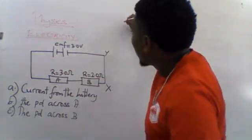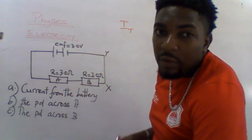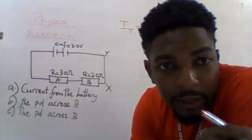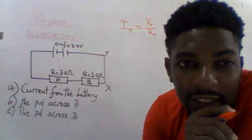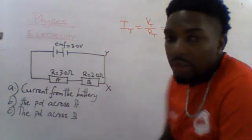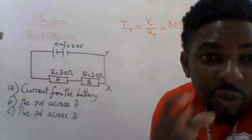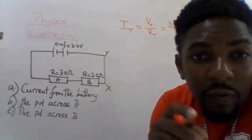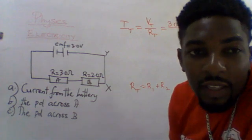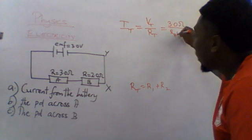We want to find the total current. Given that V is equal to IR, therefore I is going to be equal to V over R — total voltage divided by total resistance. The total voltage is the EMF given, which is 3 volts. Because it is a series circuit, the total resistance is the sum of the resistances: R_total equals R_A plus R_B.